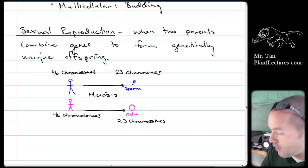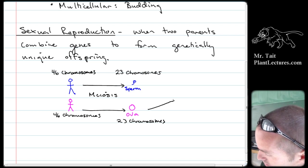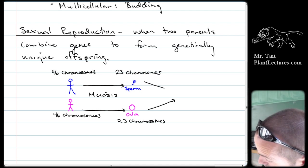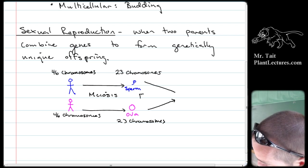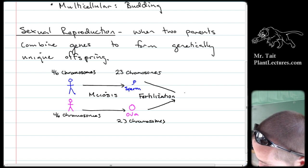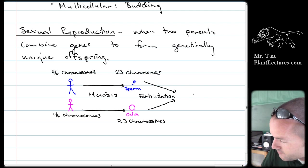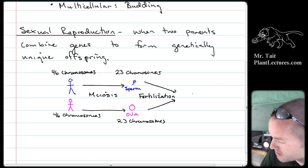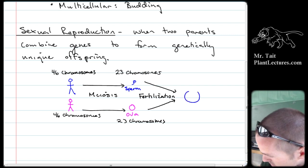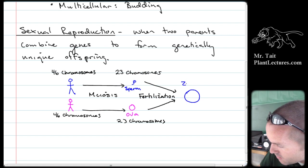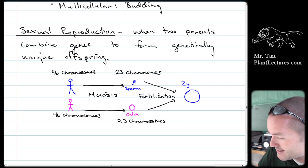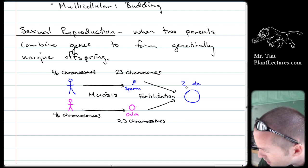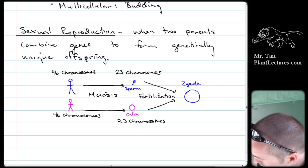When sperm and ova combine through a process called fertilization, it forms a single cell. Depending on whether a Y chromosome is present, it will be male or female. This single cell is called a zygote.